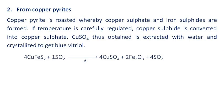From copper pyrites: copper pyrite is roasted, whereby copper sulfate and iron sulfides are formed. If the temperature is carefully regulated, copper sulfide is converted into copper sulfate. The copper sulfate thus obtained is extracted with water and crystallized to get blue vitriol.